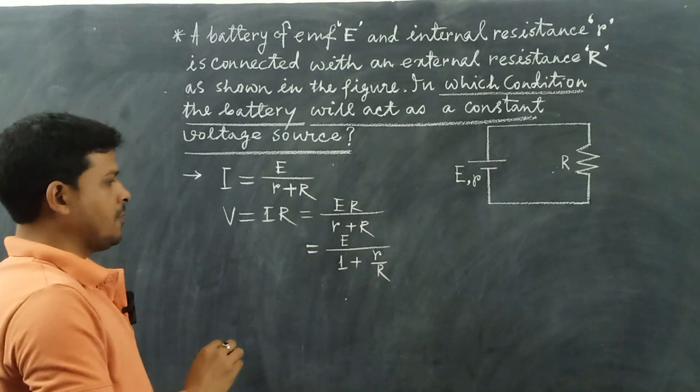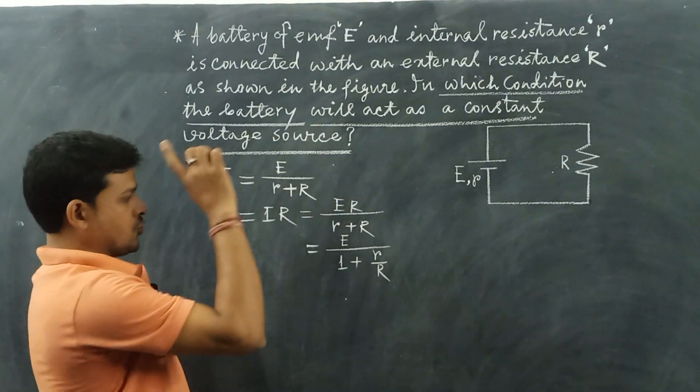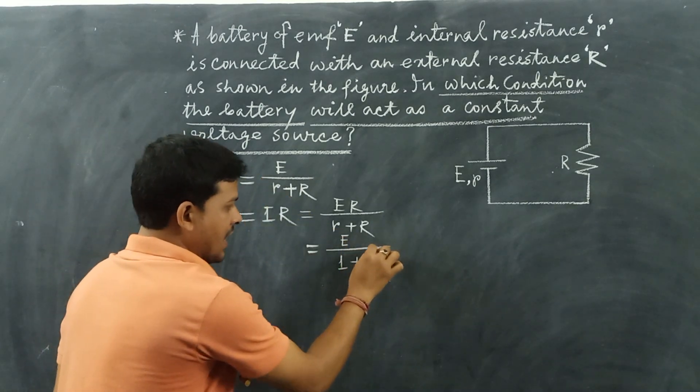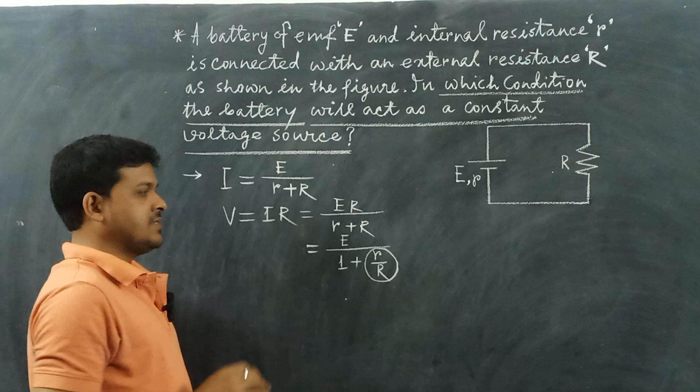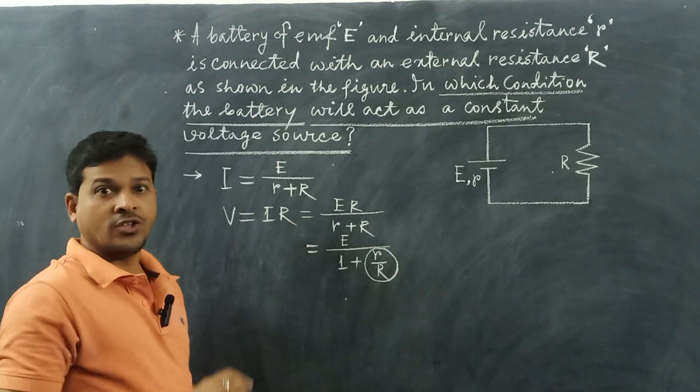The condition for a constant voltage source is if the term r by R is neglected. When is this possible?